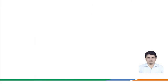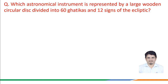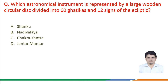The next question is: which astronomical instrument is represented by a large wooden circular disc divided into 60 Gattikas and 12 signs of the ecliptic? The given options are: a) Shanku, b) Nadiwalaya, c) Chakrayantra, d) Jantar Mantar.